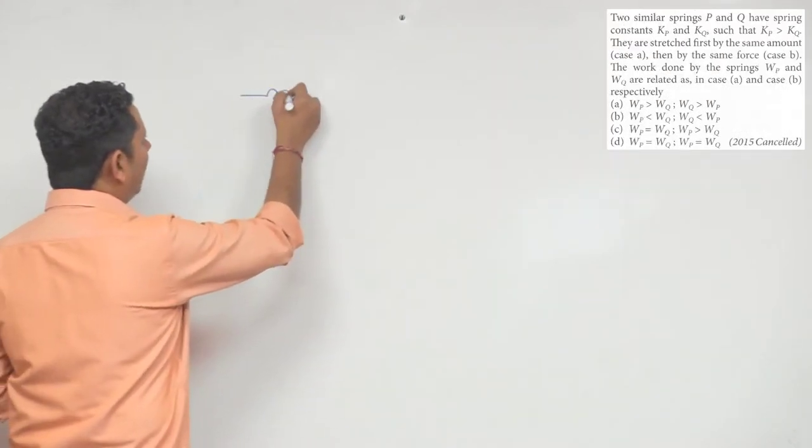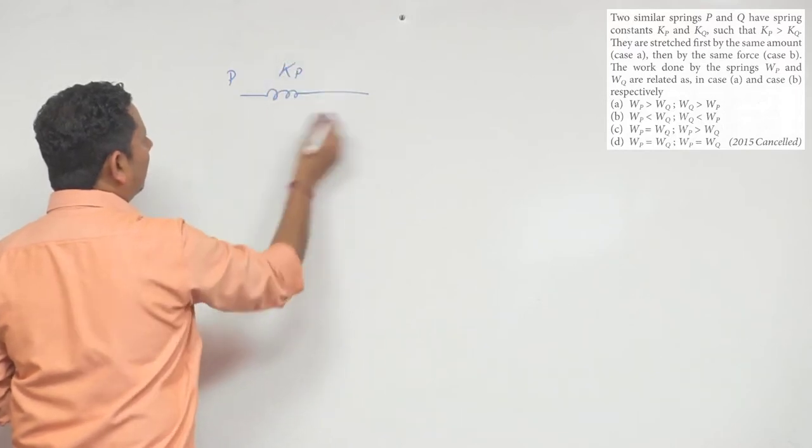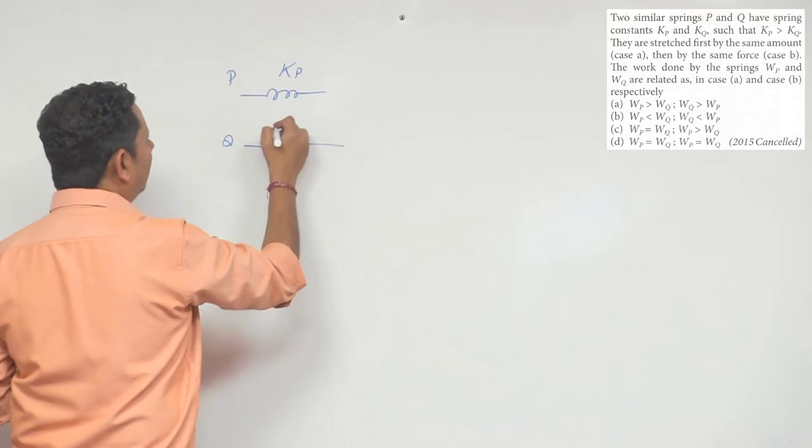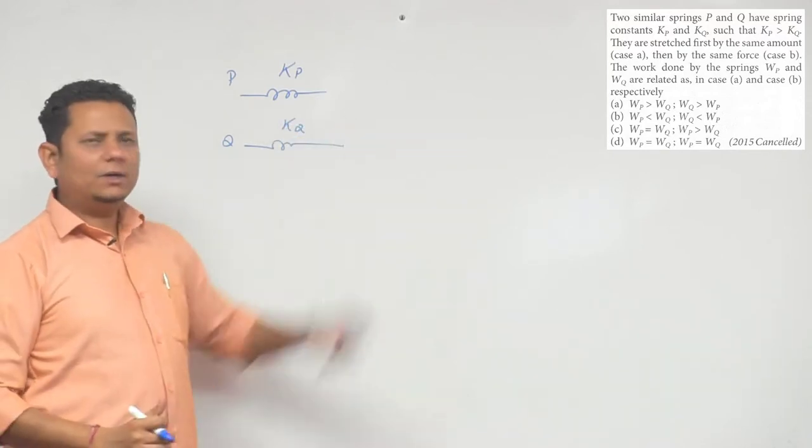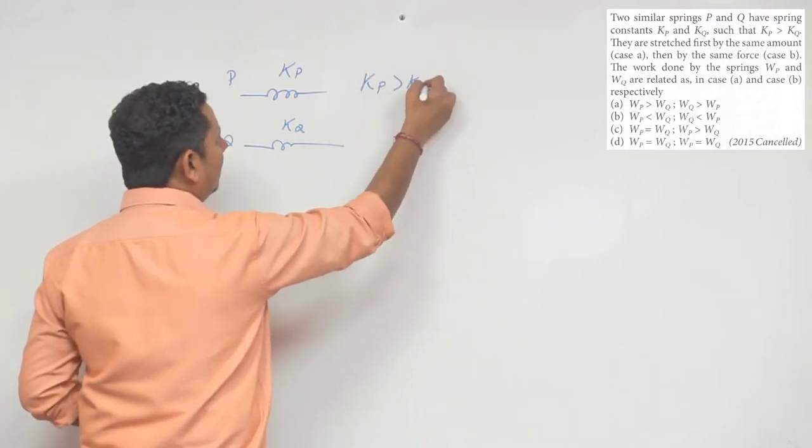So this is your spring, let's say this is your spring P, and this is Kp, the spring constant. This is the second spring, this is Q spring, this is Kq. We have been told that Kp is greater than Kq.